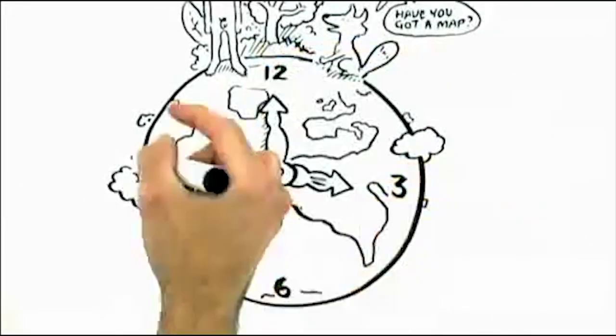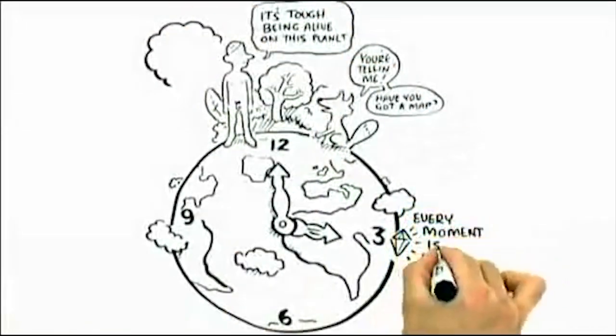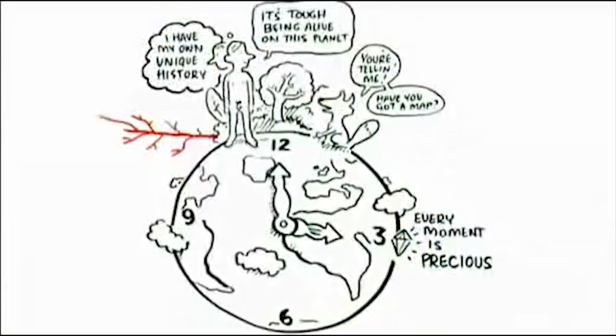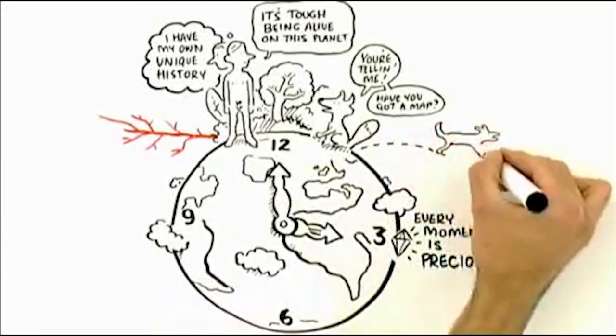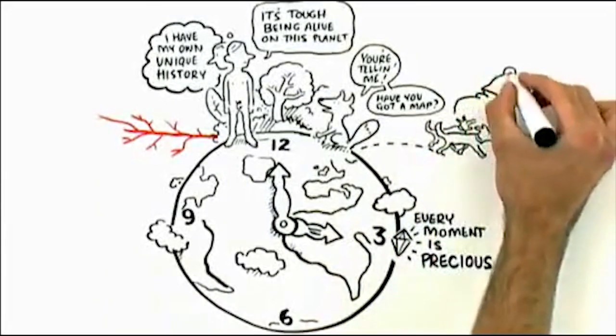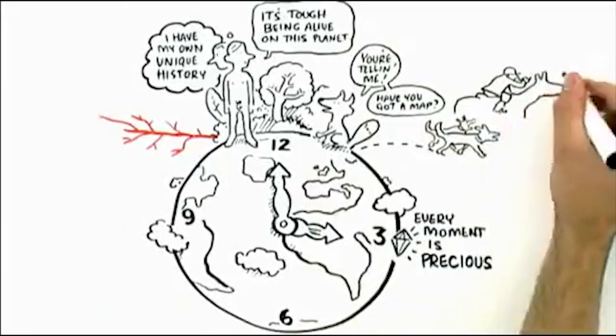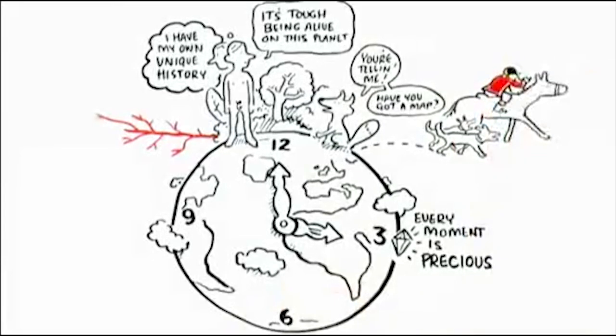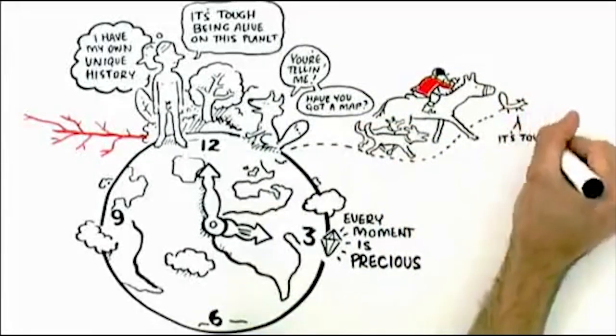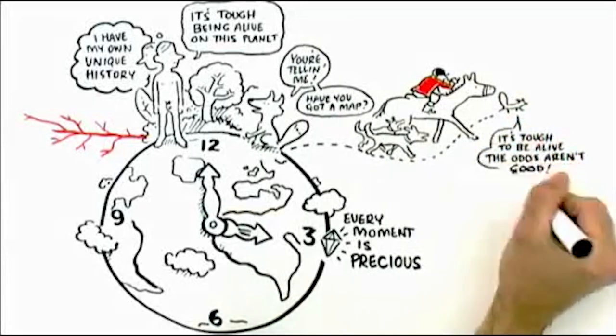So when a child learns that life is vulnerable and fragile and that every moment is precious and that they have their own unique history, it allows a child then to experience another's plight in the same way. That that other person or other being, could be another creature, has a one and only life, it's tough to be alive, and the odds are not always good.